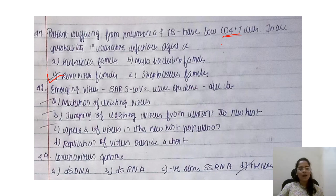Emerging virus SARS can cause — we can consider this in the context of COVID-19 infection. The causes include: mutation of an existing virus (yes), jumping of an existing virus to a new host (yes), spread of the virus in a new host population (yes), and application of virus outside the host (no — it acts inside the host, not outside). This was a multiple selection question.